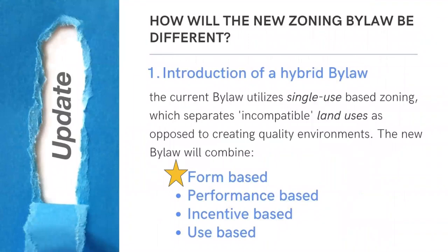So the new Zoning Bylaw will attempt to correct all of those features by, firstly, introducing a Hybrid Bylaw. This means it will move away from strictly use-based zoning that separates uses from one another to a hybrid approach that incorporates form-based zoning, performance-based zoning, and incentive-based zoning, while retaining use-based zoning for very simple development.